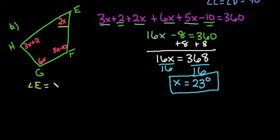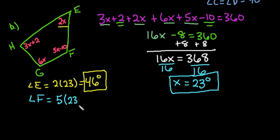So we would start with angle E, and we would just do 2 times 23, which ends up giving us 46 degrees. So angle E is 46 degrees. Angle F, we would take and plug in 5 times 23 minus 10. This ends up giving us 115 minus 10 gives us 105 degrees.